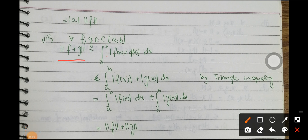For condition 3: ‖f + g‖ = ∫ₐᵇ |f(x) + g(x)| dx ≤ ∫ₐᵇ (|f(x)| + |g(x)|) dx = ∫ₐᵇ |f(x)| dx + ∫ₐᵇ |g(x)| dx = ‖f‖ + ‖g‖, by the triangle inequality. All three properties are satisfied, so C[a,b] with the integral norm is a normed space.